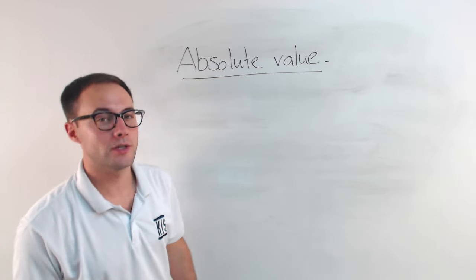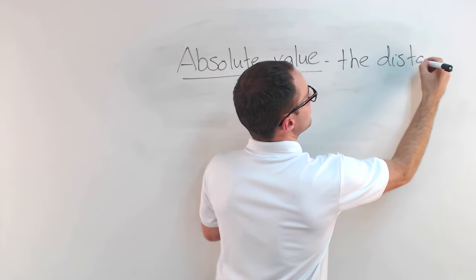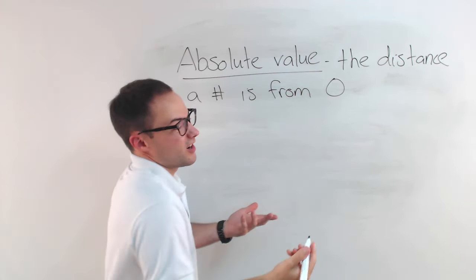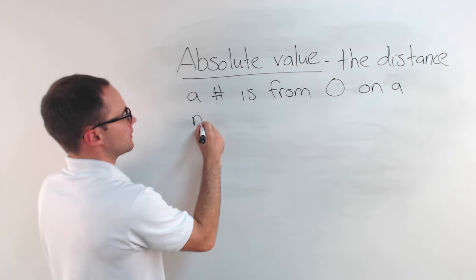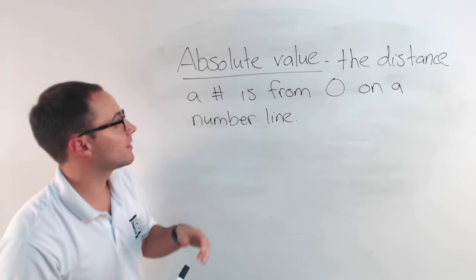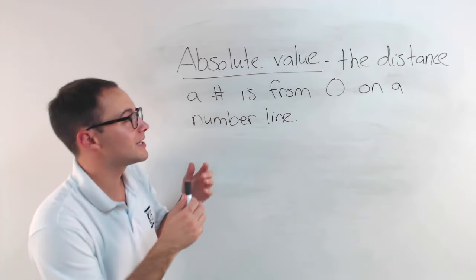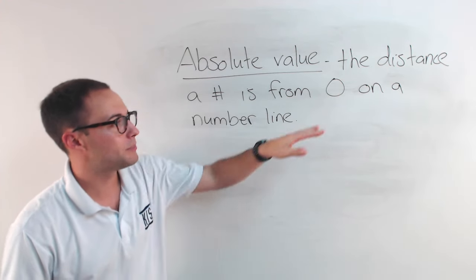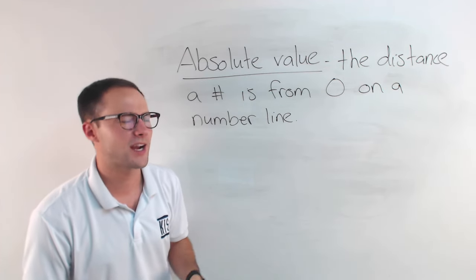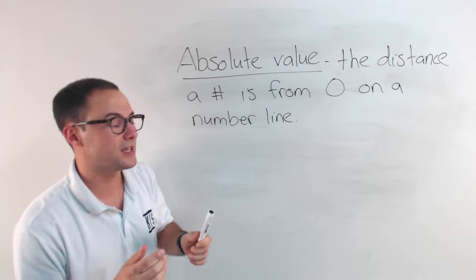Next, let's talk about what absolute value is. Absolute value is simply the distance a number is from 0 on a number line — just how far away is that number from 0. When you think about a distance, distance is always going to be positive. So when you take the absolute value of a number, you're never going to get a negative value.